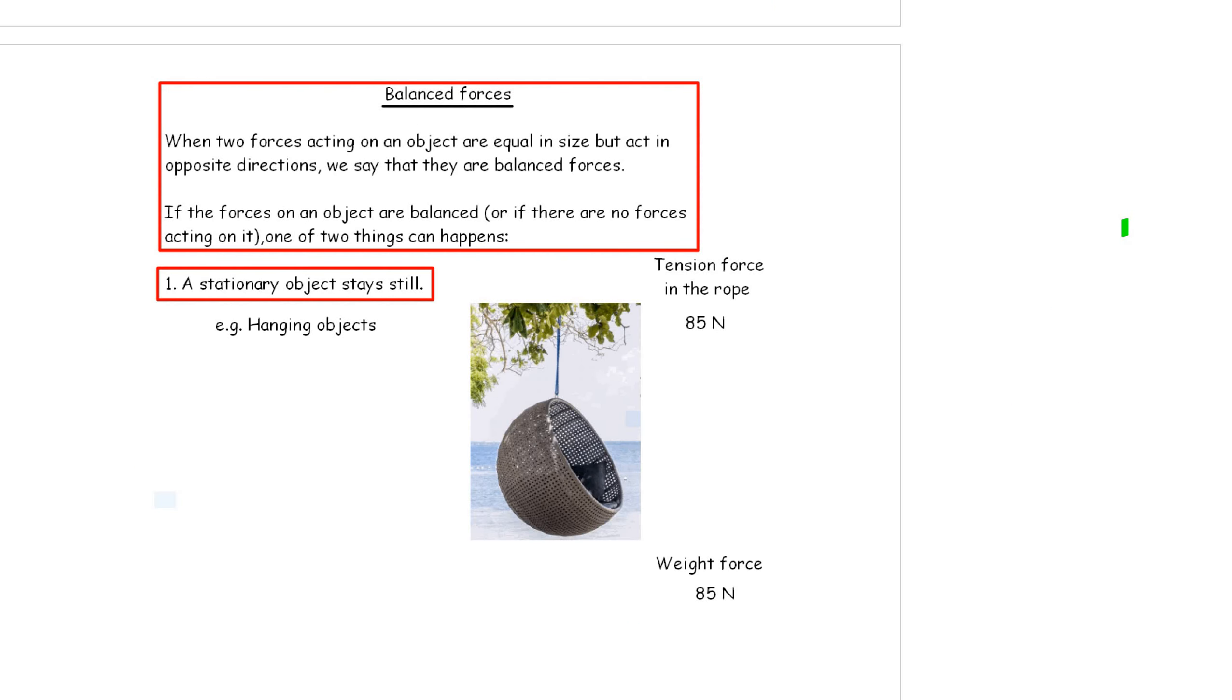Now, you're going to find out that forces can be balanced. They can be equal but opposite. When two forces acting on an object are equal in size but act in opposite directions, we call them balanced. If the forces on an object are balanced or if there's no forces acting on them, so they're still balanced, one of two things can happen.